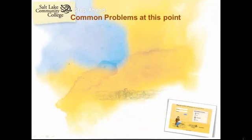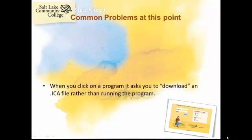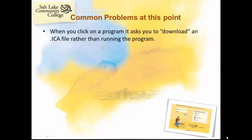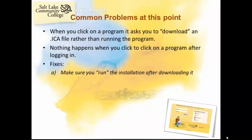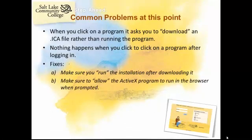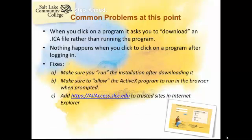Now let's discuss some common problems you may have. One may be that when you click on a program, it asks you to download an ICA file rather than running the program. Another may be that nothing happens when you click on a program after logging in. Some common fixes include: first, make sure you have actually run and installed the client after downloading it; then make sure you allowed the ActiveX program to run when prompted; and make sure you've added All Access to the list of trusted sites in Internet Explorer.